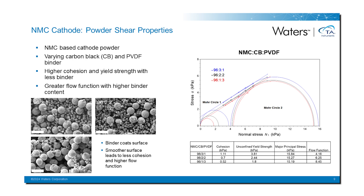There is a push to reduce and replace solvent in the manufacturing process because of the unwanted time and cost it adds. Doing this requires dry mixing of electrode components followed by characterization to optimize the dry coating process without solvent. In this example, an NMC-based cathode powder is analyzed where the carbon black conductive additive and PVDF binder ratio is altered. Shear results show that decreasing binder increases the cohesion and yield strength of the powder, while the flow function increases with increasing binder content.